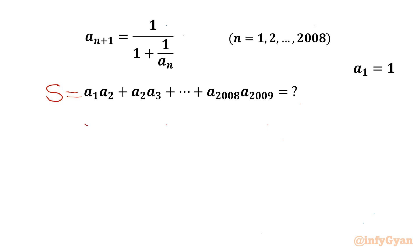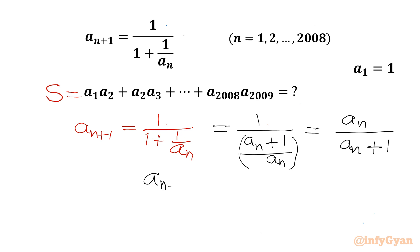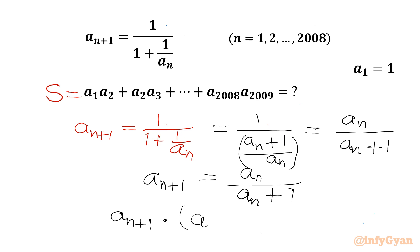Let's begin with our formula: a_{n+1} = 1 / (1 + 1/a_n). Taking the LCM in the denominator, I can write this as 1 / ((a_n + 1) / a_n), which simplifies further to a_n / (a_n + 1). So a_{n+1} = a_n / (a_n + 1). Now let's cross multiply: a_{n+1} * (a_n + 1) = a_n.